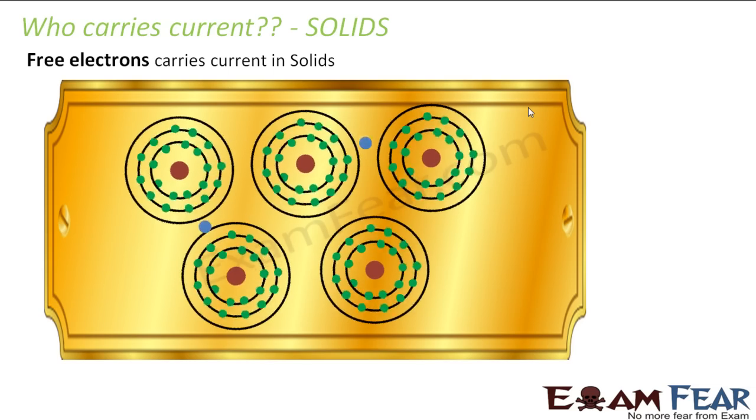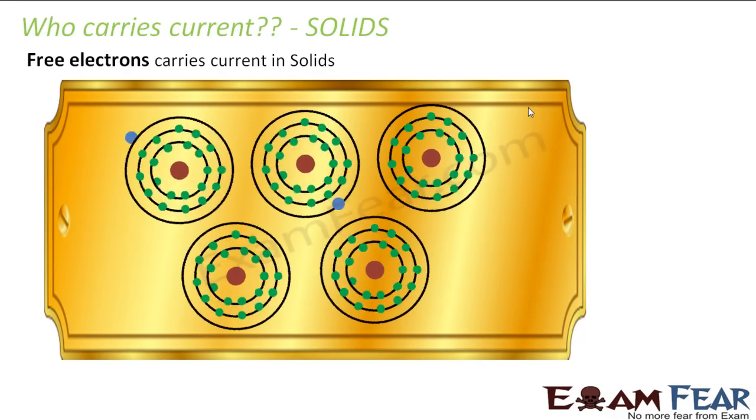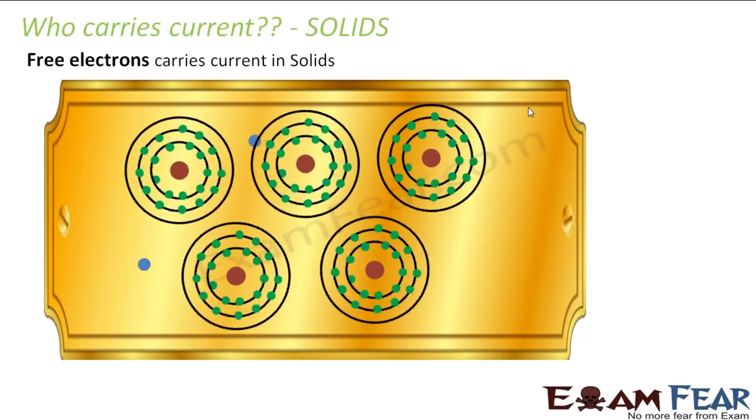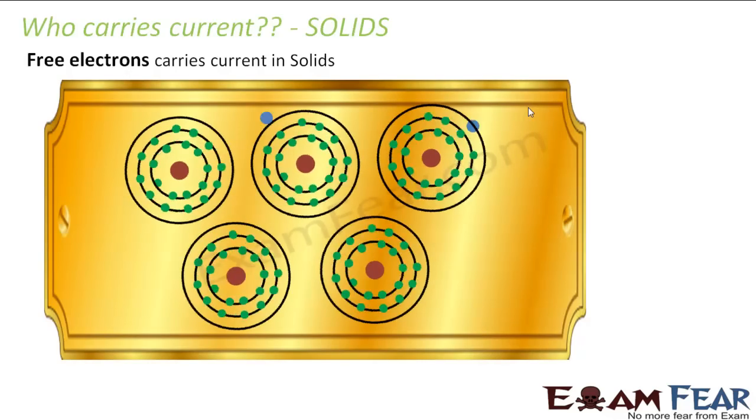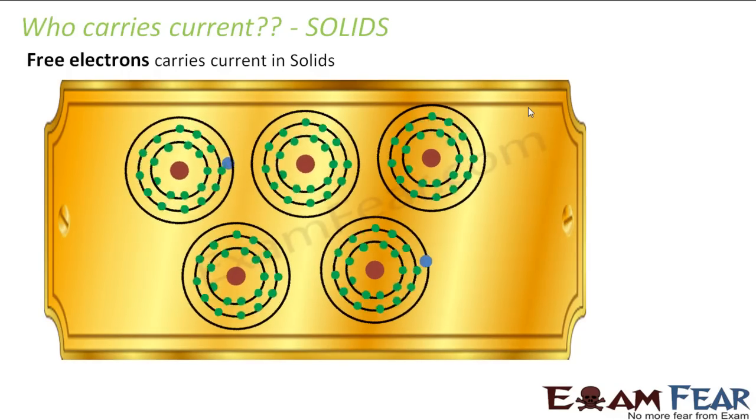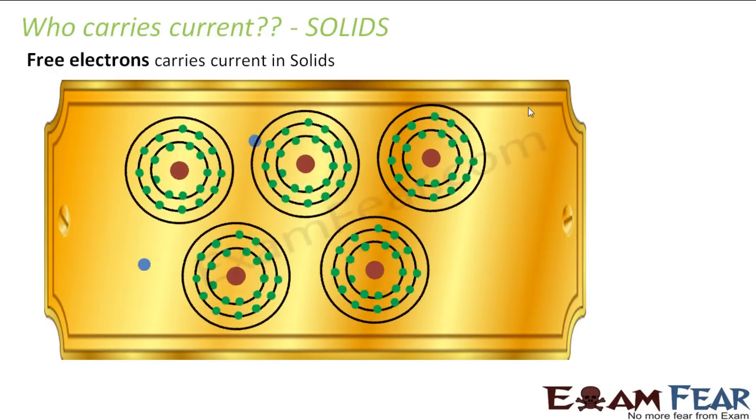Now let us move ahead to the next topic which says who carries current. The question is, we now know that current flows due to the flow of charges or flow of electrons or whatever it is. So that means there is a carrier who carries current - either it is electron or it is something else.